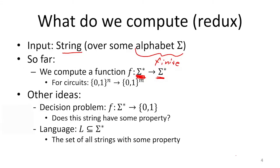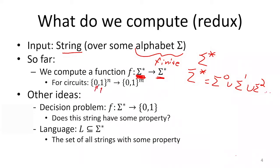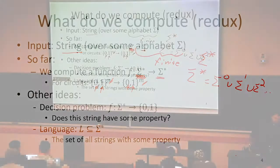We want to compute some function that takes strings as input and produces strings as output. Sigma star means zero or more things from the alphabet — a sequence of zero or more things. So sigma star was sigma to the zero, union sigma to the one, union sigma to the two, and so forth. For circuits, we in particular talked about the alphabet being bits, zero and one, and we were restricting the input and output size to be a fixed size, as opposed to the star which meant any finite length string.